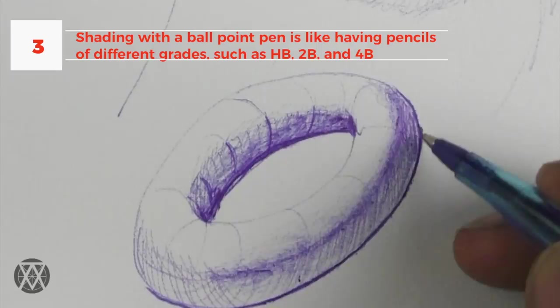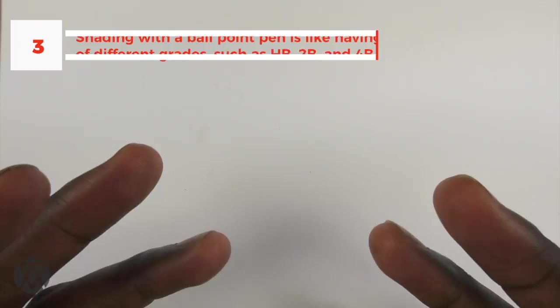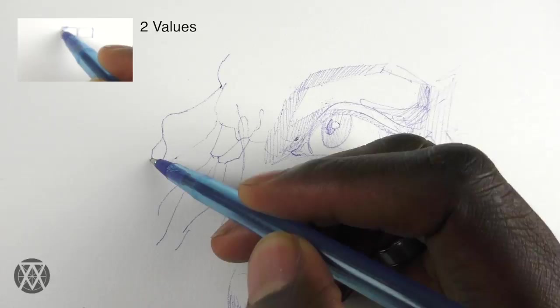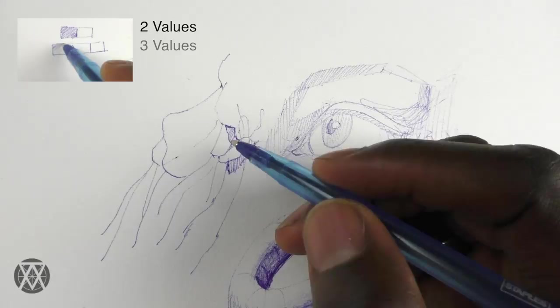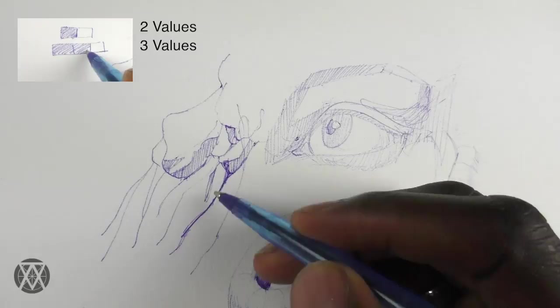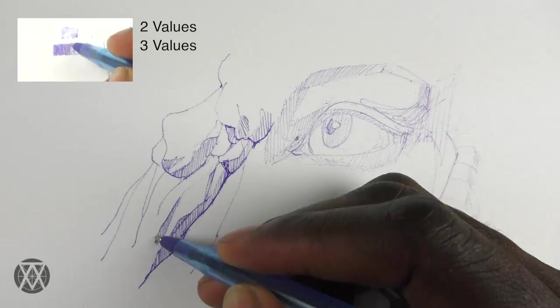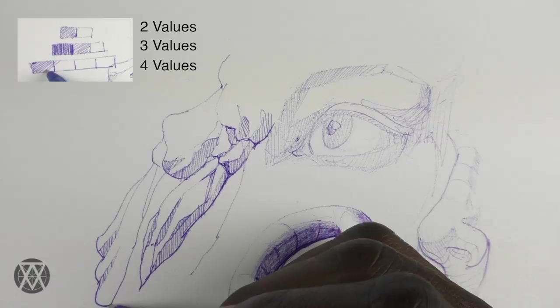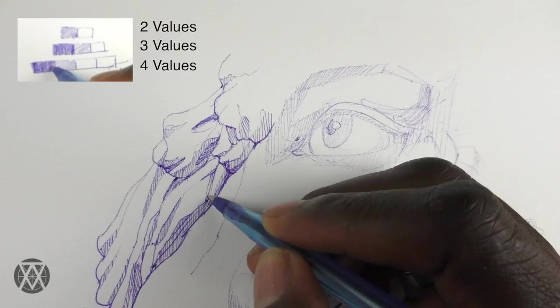You can start your shading very lightly just to feel things out before committing to any serious rendering by lightly mapping out the overall value pattern. Then gradually deepen your values as the drawing progresses or as you become more comfortable with the subject. In the beginning, you're really just feeling things out, making notations or observations—here is shadow, here is light. Gradually, as the drawing develops, you can start committing to where the half shadows, deep shadows, and cast shadows are.